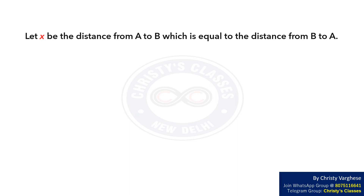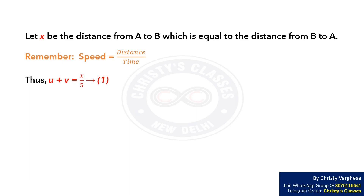Let X be the distance from A to B, which is equal to the distance from B to A. Remember that speed equals distance divided by time. Thus, U plus V equals X by 5. Let this be equation 1.